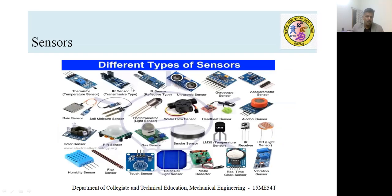A few more types of sensory devices include infrared sensors, thermometers, photosensors, soil moisture detectors, rain sensors, humidity sensors, and metal detectors. A large number of sensors are used to measure different parameters or physical values.